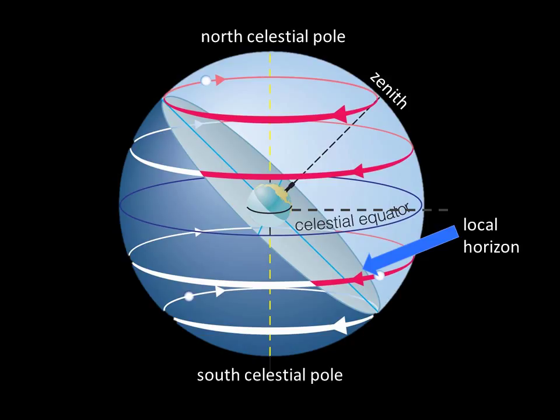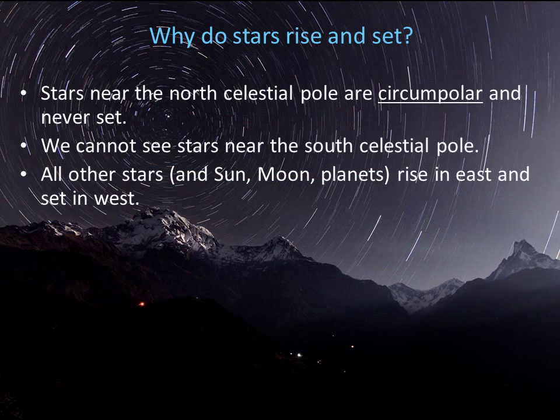In Rockville, things are in between. We are 39 degrees above the Earth's equator, or 39 degrees latitude. The light blue plate illustrates our local horizon. For us in Rockville, some stars will never get low enough to set, and some stars — those that are close to the south celestial pole — will never rise for us. Stars that are near the north celestial pole are called circumpolar, and they never set.